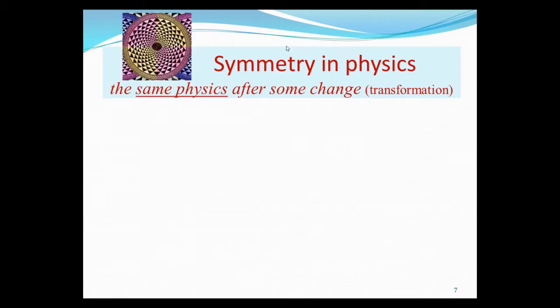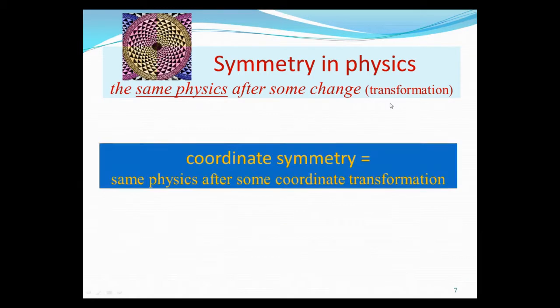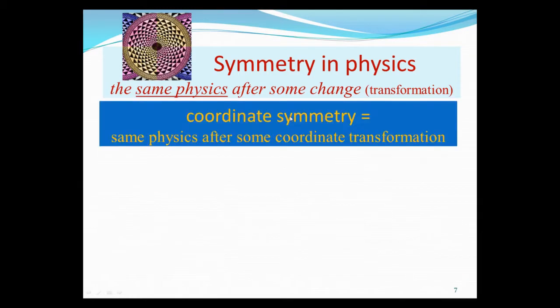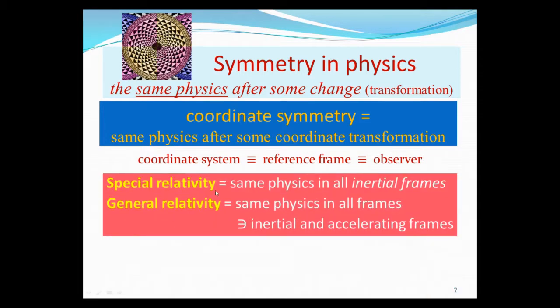So, what is symmetry in physics? By symmetry in physics, we mean we have the same physics after some change. In other words, we have the same physics equation after some transformation. For example, by coordinate symmetry, we may have the same physics equations after making a coordinate transformation. By coordinate system, we mean the same as frame of reference, or reference frame, or observer. They are all the same thing, different ways of saying the same thing. In this way, we can distinguish between special relativity and general relativity.